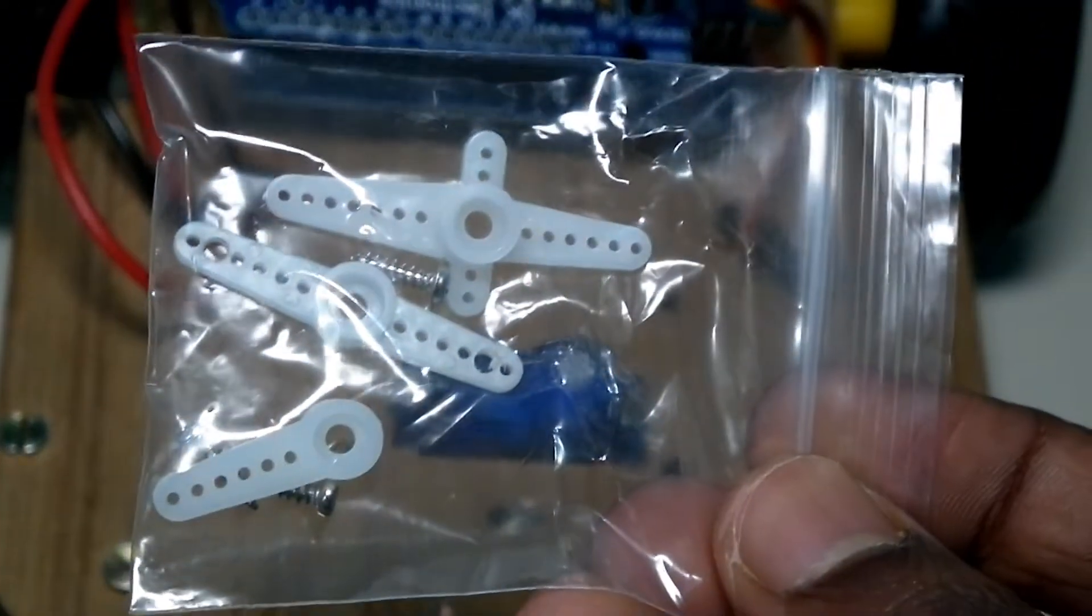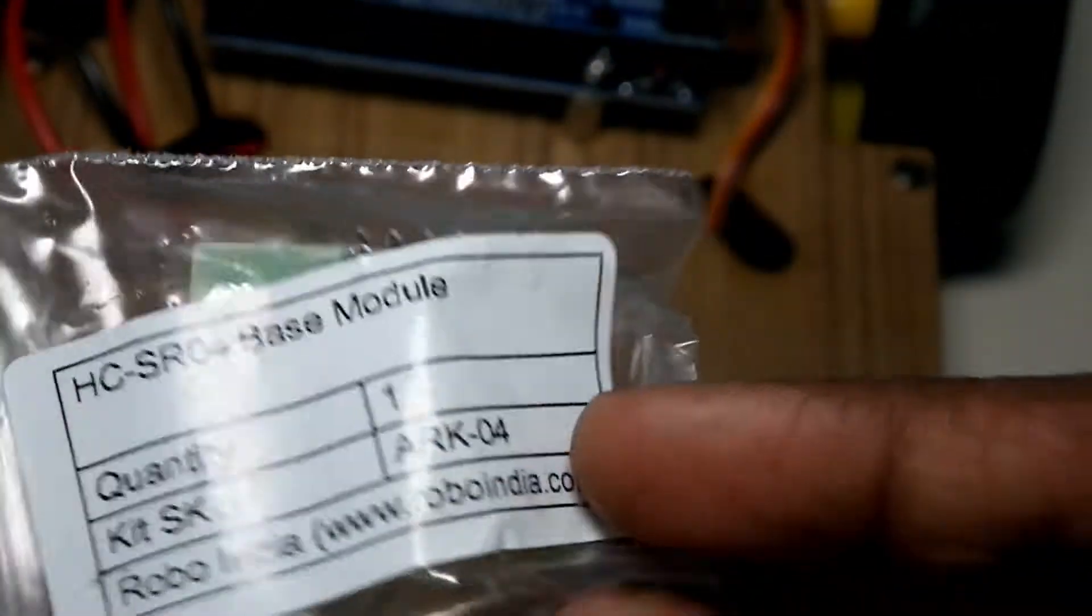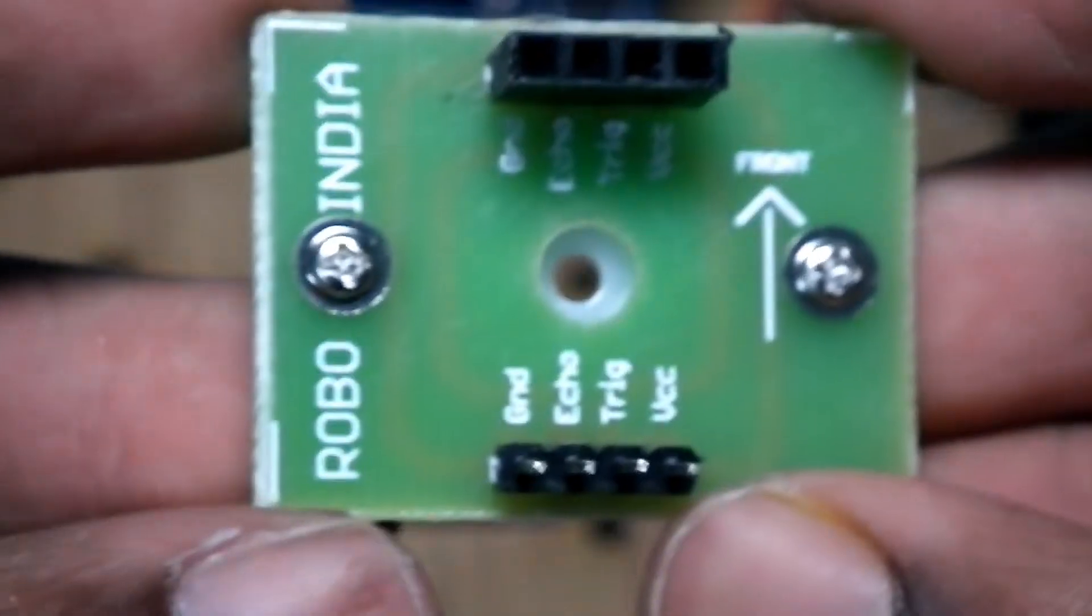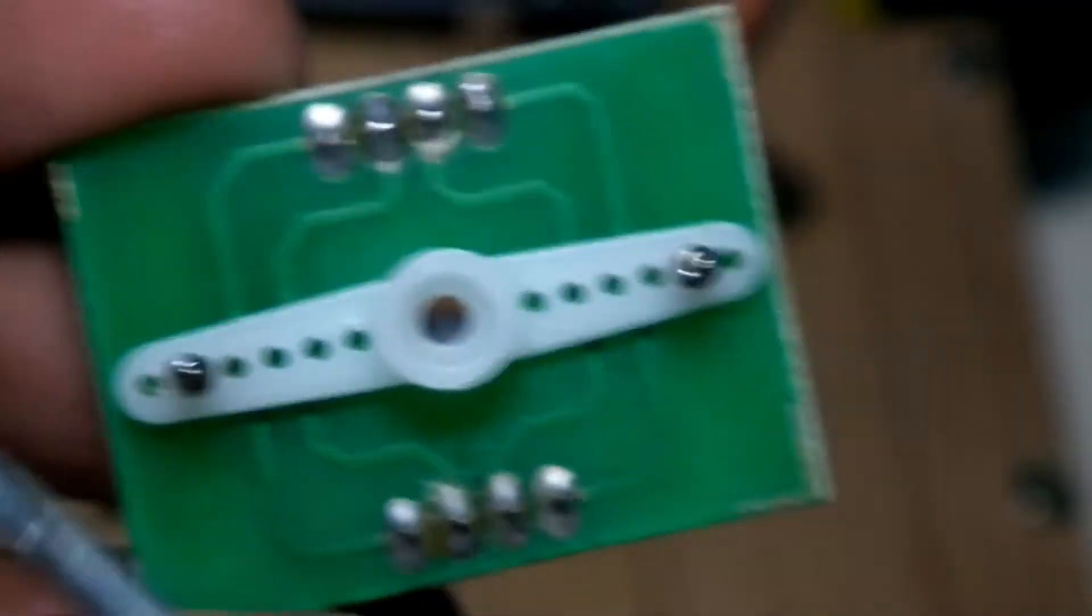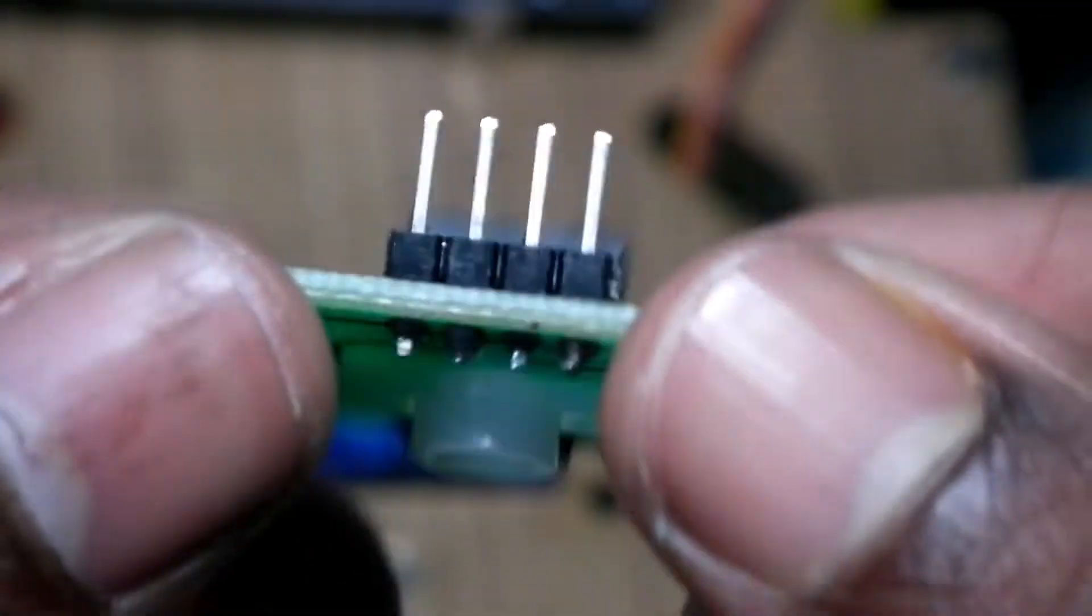Now you can see these screws over here. For this project, this accessory and two screws are required. This is the base module for the ultrasonic sensor. We will align this like this over here. I have used the accessory given with the servo motor and there are two big screws which came along with it, and I have tightened them with the base module for the ultrasonic sensor.